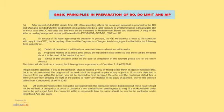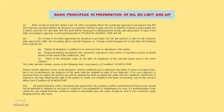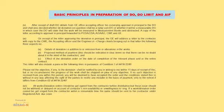This letter will also include a paragraph on the following lines: 'Please note that objection, if any, to the deviation shall be notified by you in writing to me within fifteen days of receipt of this letter, but in no circumstances shall progress of the work be stopped on account of any objection. If no such objection is received from you within this period, you will be deemed to have accepted the order and the conditions stated therein, without affecting the right of the parties to rectify any mistake in the basis of payment only, to the extent if it differs from Condition 62.2.49.'